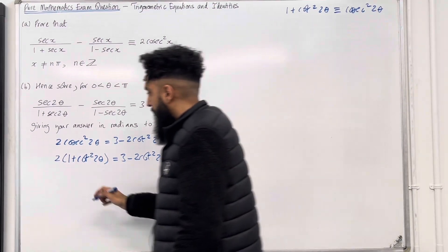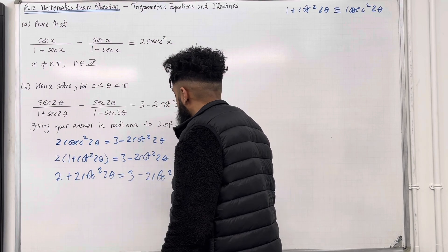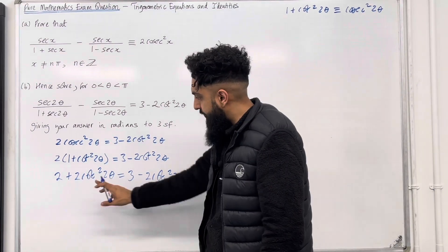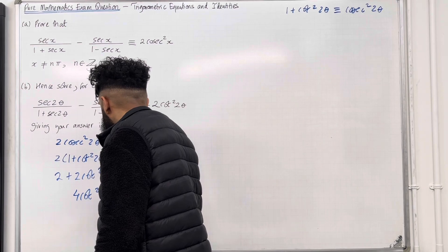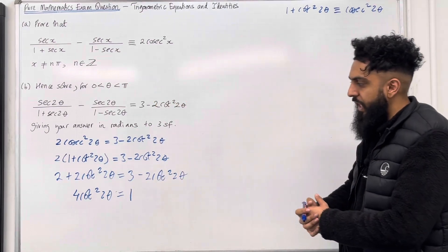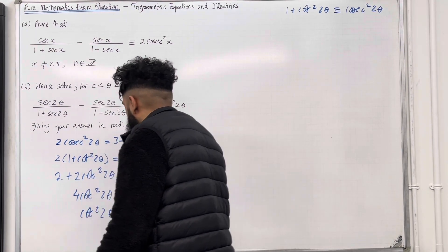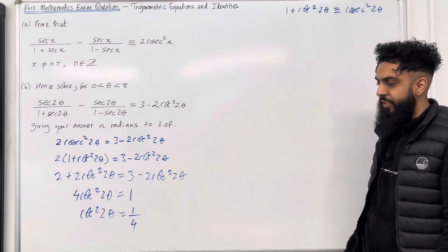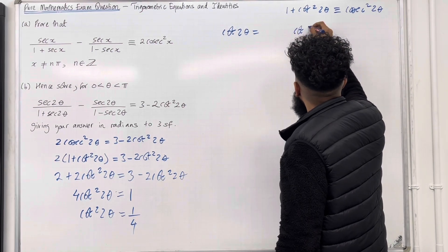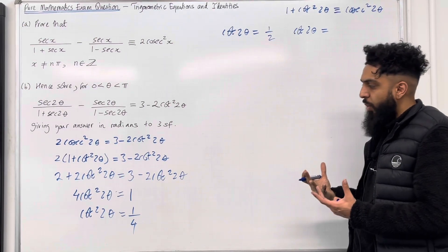So I've got 2 multiplied by 1 plus cos squared 2θ equals 3 minus 2 cos squared 2θ. This is brilliant because now I've got one trigonometric ratio in the equation: cos squared 2θ. Expanding the brackets gives 2 plus 2 cos squared 2θ equals 3 minus 2 cos squared 2θ. Collecting the cos squared 2θ terms: taking it to the left hand side gives 4 cos squared 2θ, and taking the 2 to the right gives 3 minus 2, which is 1. Dividing both sides by 4 gives cos squared 2θ equals 1 over 4.